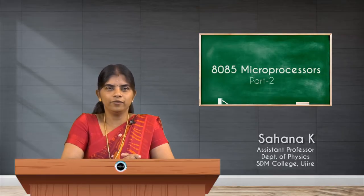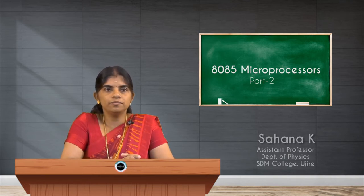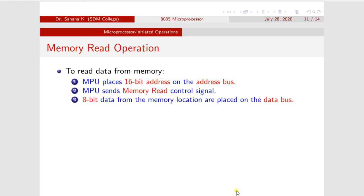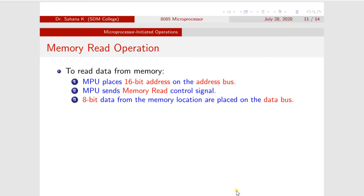I am discussing one example of microprocessor-initiated operation: the memory read operation. Memory read operation means reading the data from memory. To do this, we should know how the data is read. For that, we already discussed the buses — three different buses: address bus, data bus, and control bus. These buses are used to perform all these operations.